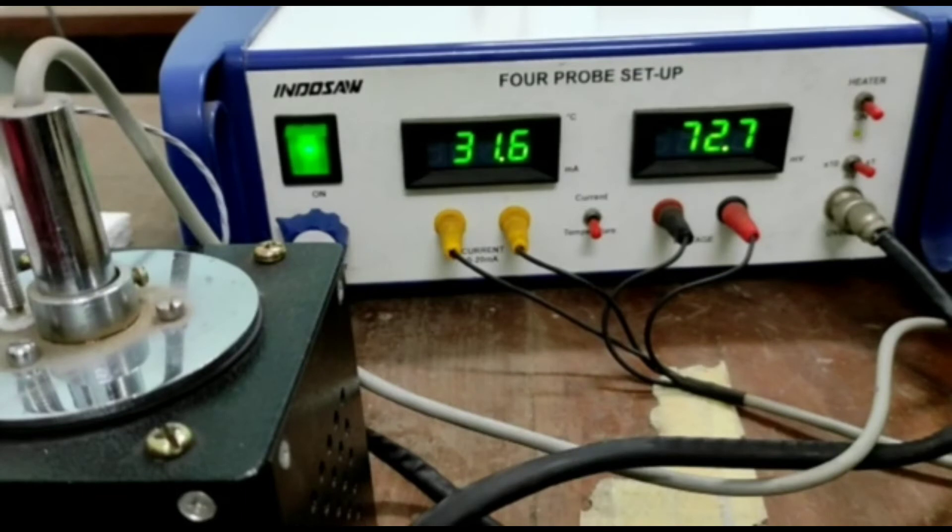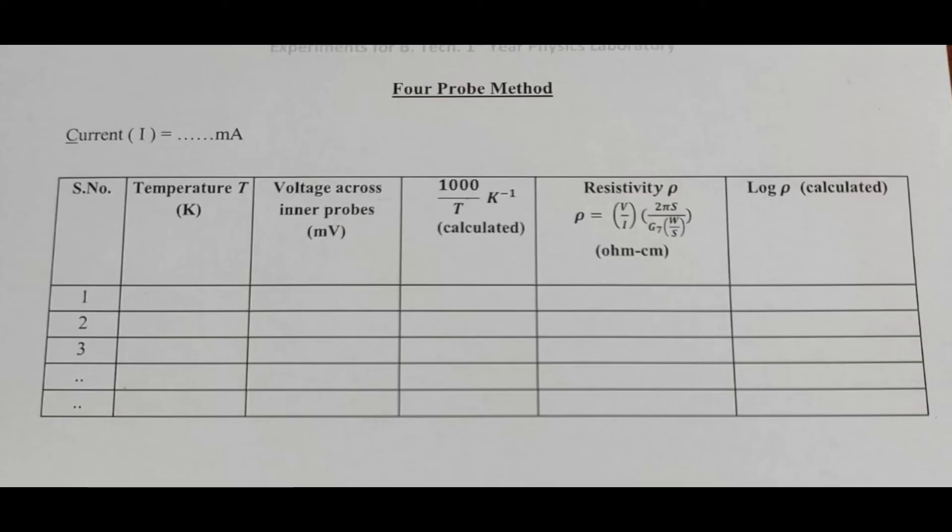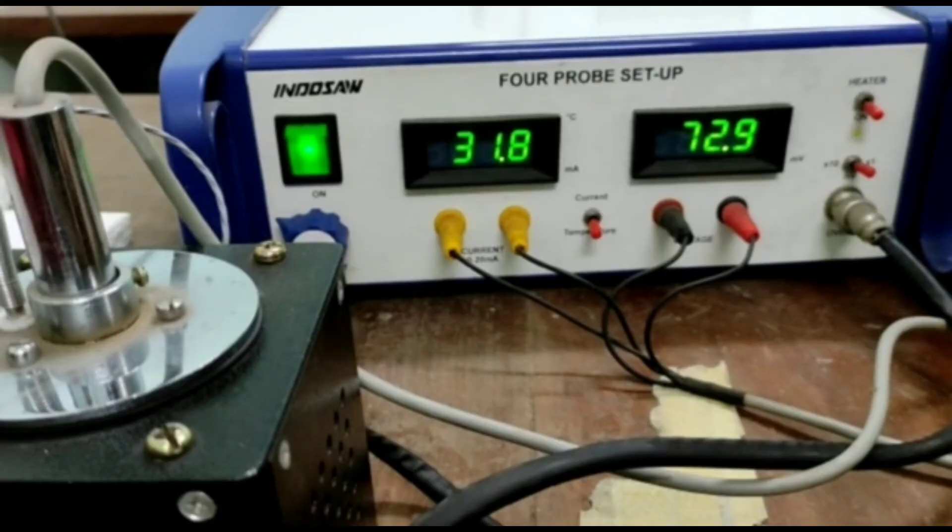So note down the temperature when temperature is increased and corresponding voltage you have to take. Take your readings at one degree intervals and repeat this procedure for different temperatures and note down the data in observation table.